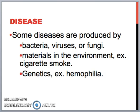Some of our diseases can come from a variety of different things. It could be from bacteria, viruses, or fungi, which are a little bit too small for us to see. Some are more avoidable, like materials in the environment such as cigarette smoke. And some, unfortunately, are genetic, like hemophilia and other diseases that run in the family.